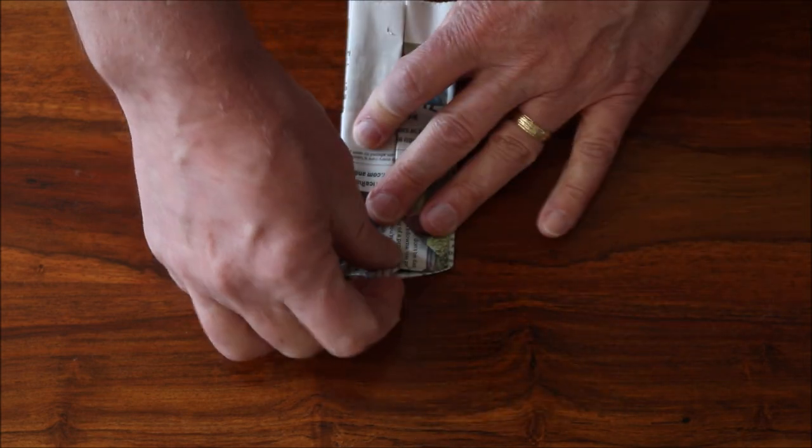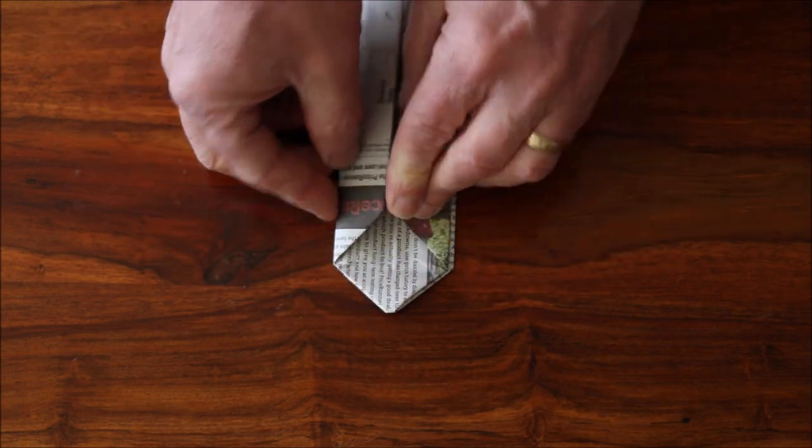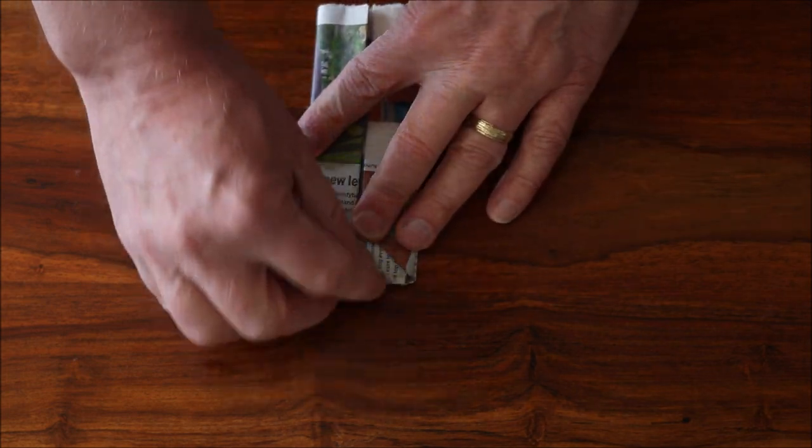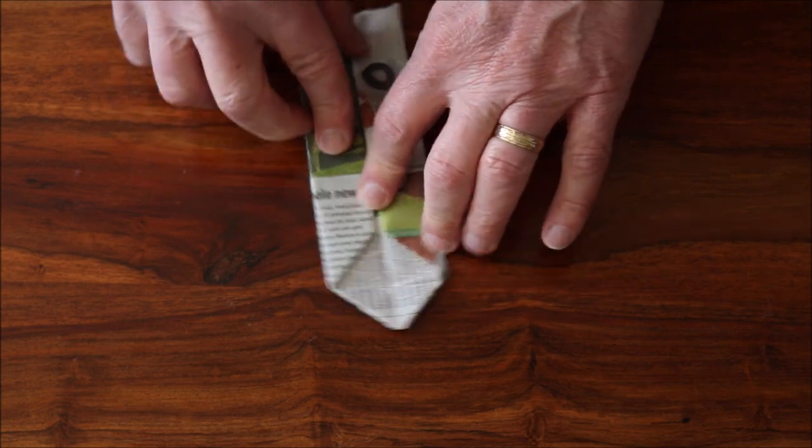Now fold the triangle bit on the end back in on itself, then undo, turn over and fold the same way on the other side. This will make it easy when you open the pot out in a few moments.